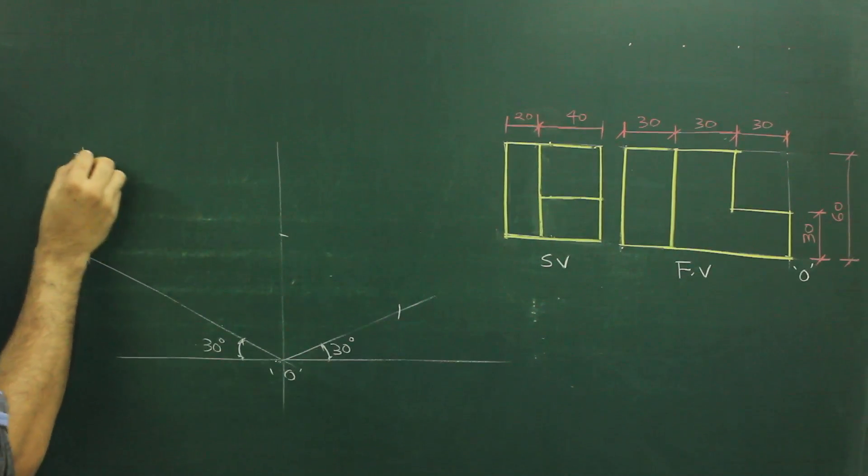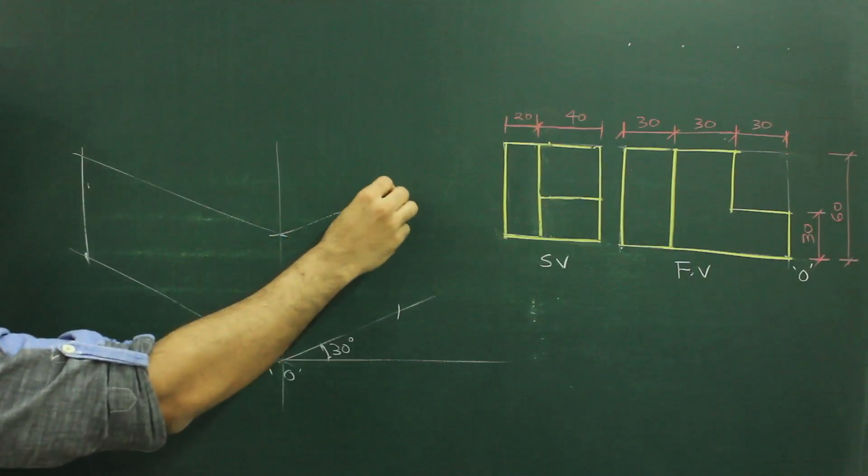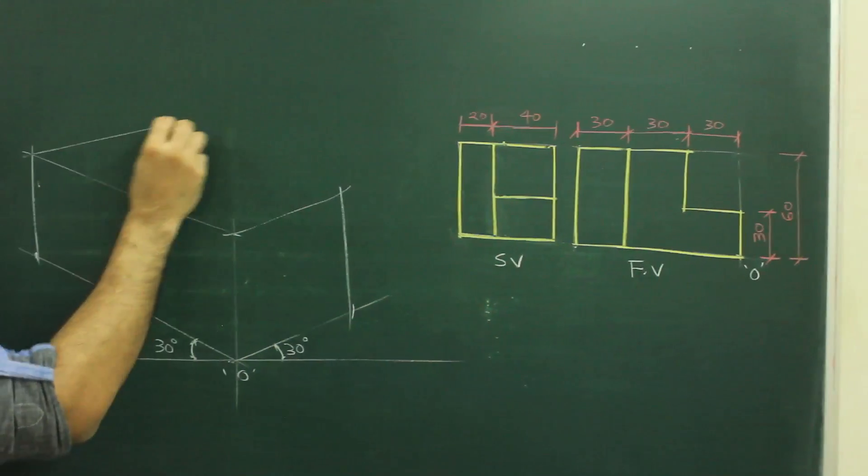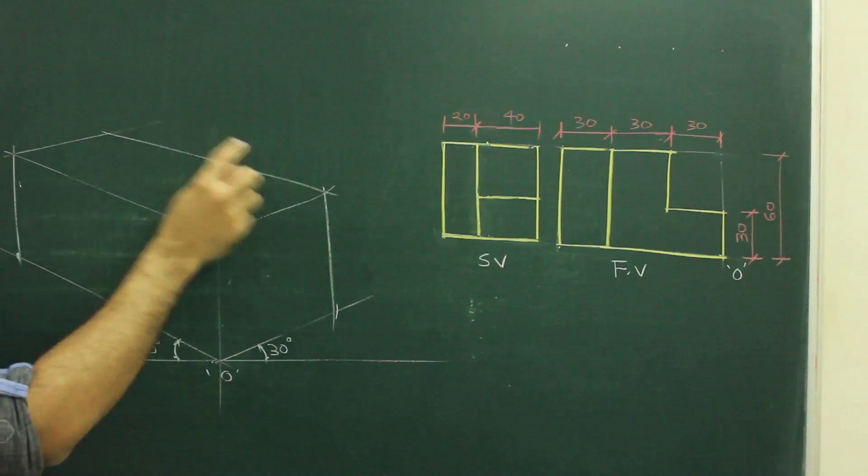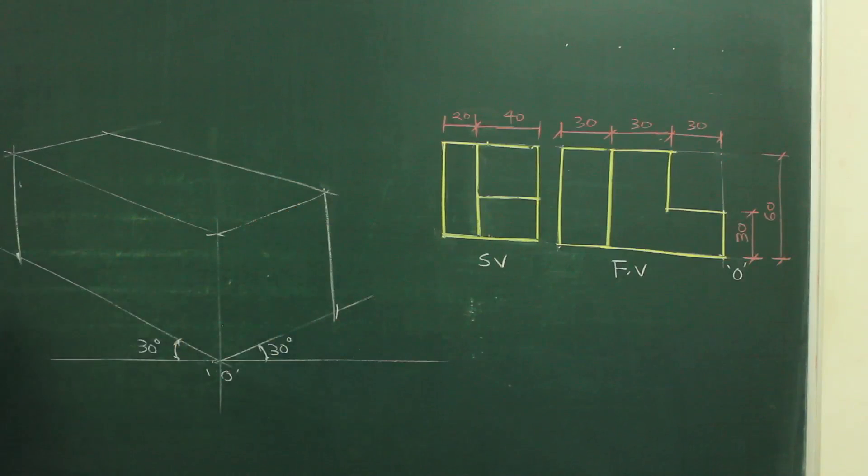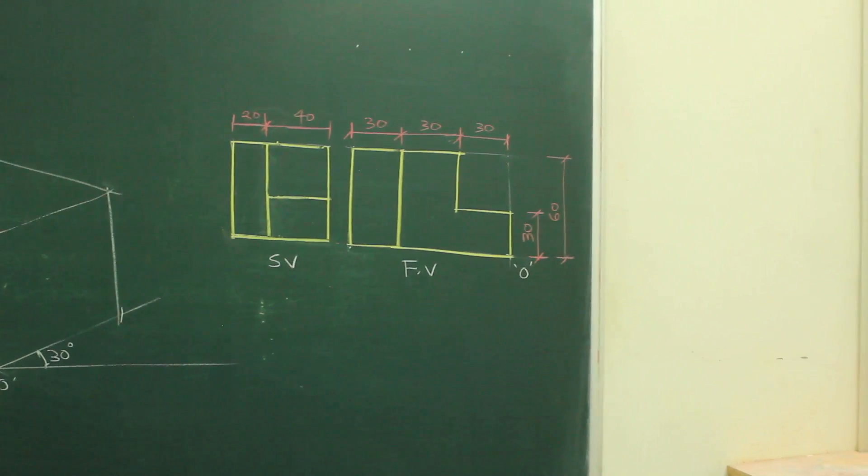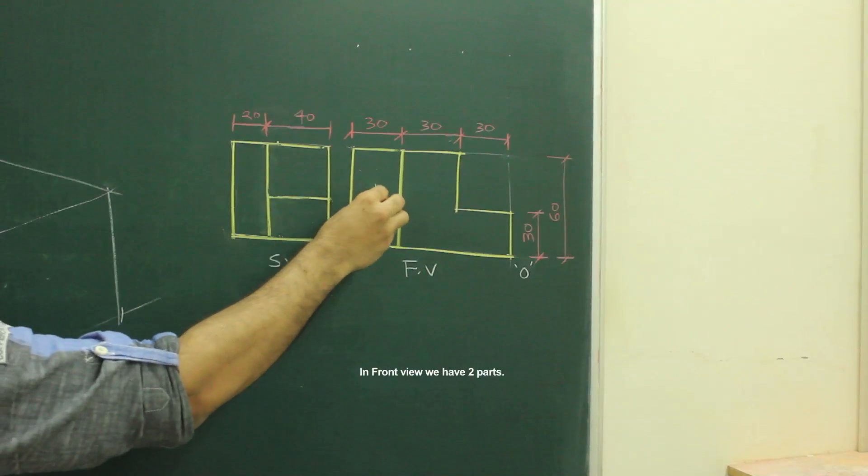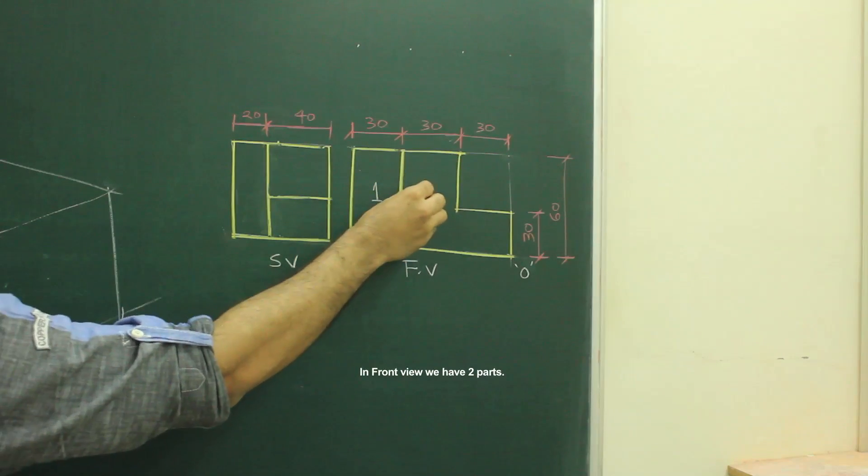First we will draw the box. After drawing this length by height box, we will start with front view. Now in this sum, this is part 1, this is part 2.